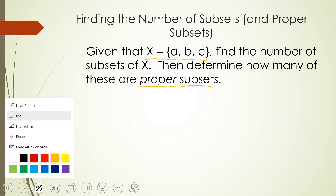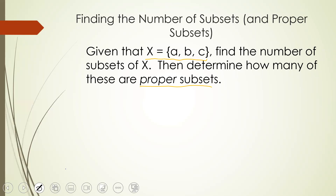To determine the number of subsets of a given set, it's best to start with the smallest possible size of a subset and work our way up. First, we know that the empty set — notated as ∅ — is a subset of any set, so it's a subset of X. Then we move on to subsets of size 1: the set {a}, the set {b}, and the set {c}. That covers all possible single-element subsets.